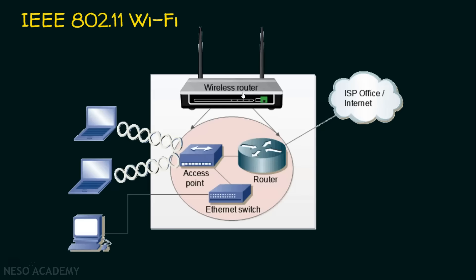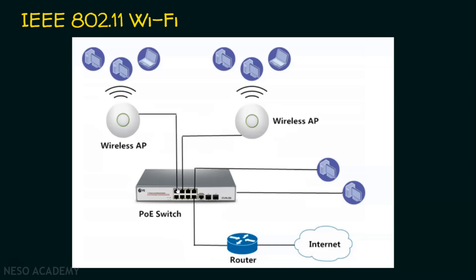Let's see one more example. Here we have a switch providing connectivity to two wireless access points — wireless access point 1 and wireless access point 2 — both connected to this Ethernet switch. This is a PoE switch, that is Power over Ethernet, which means the wireless access points do not need a separate power supply; the Ethernet cable between the switch and the access point also carries power. If a device wants Internet connectivity, it connects to the wireless access point, which connects to the switch, which connects to the router, which forwards data packets to the Internet.